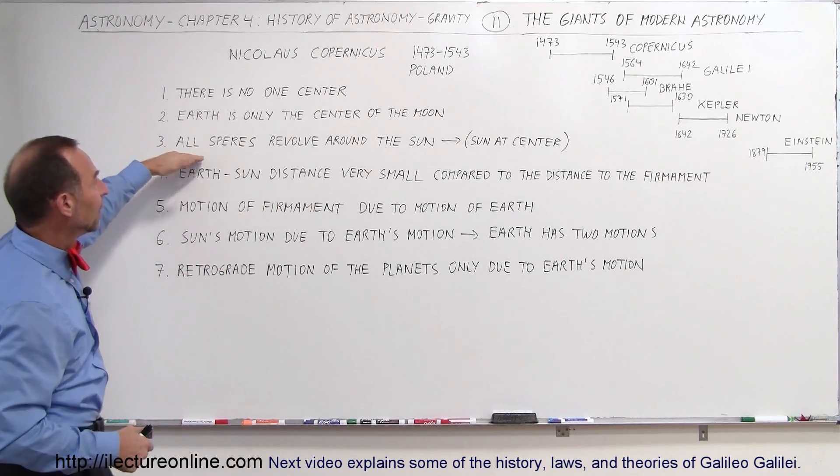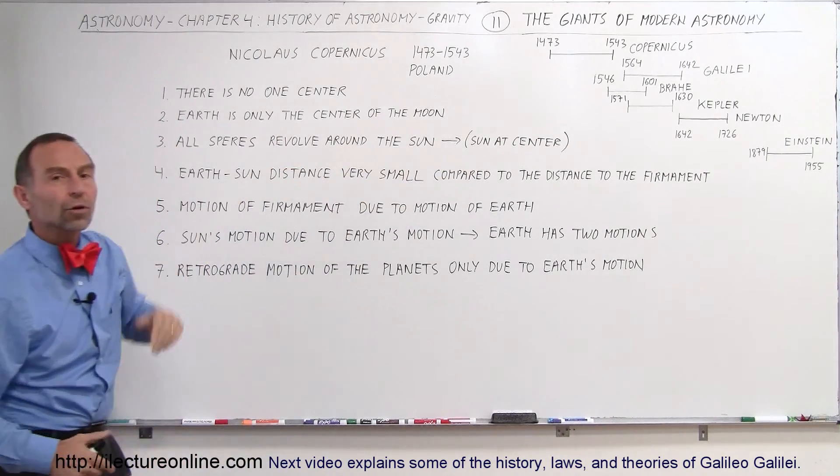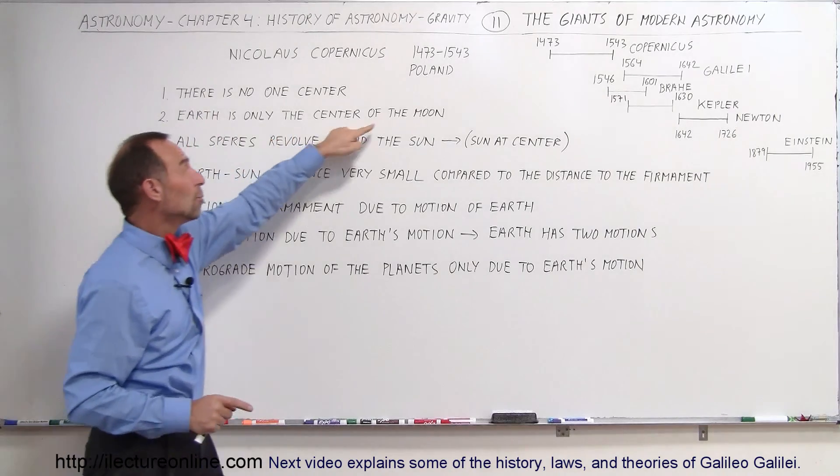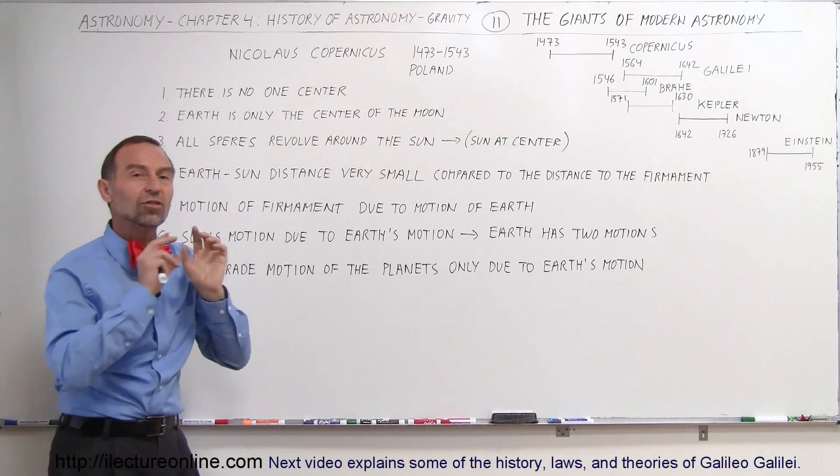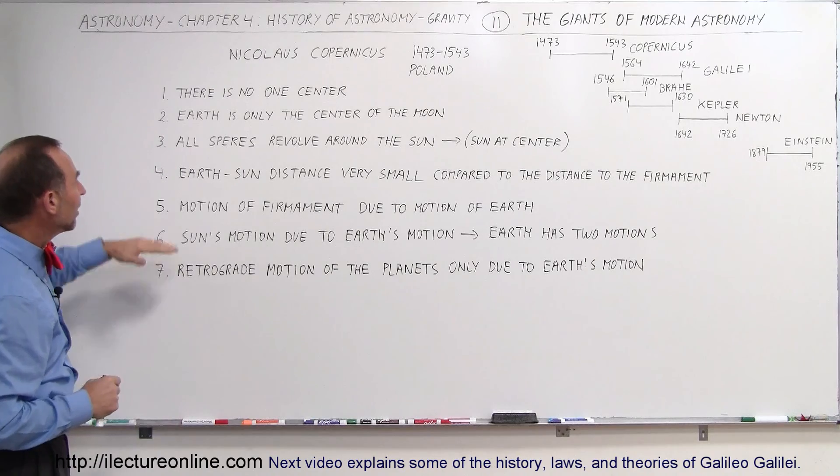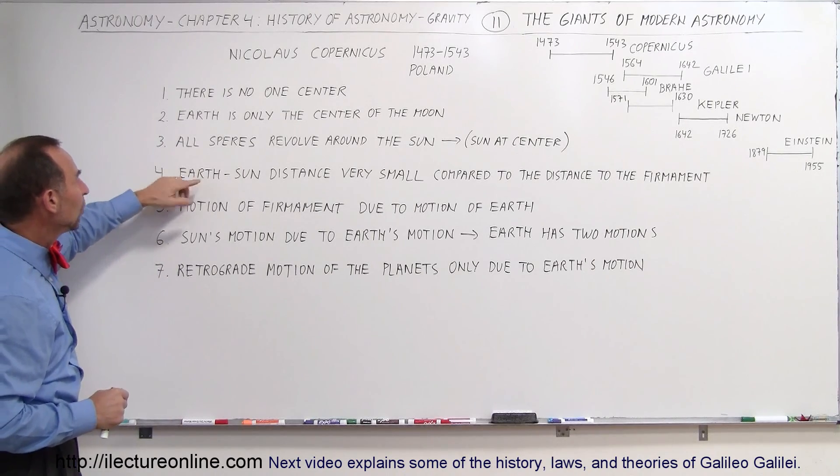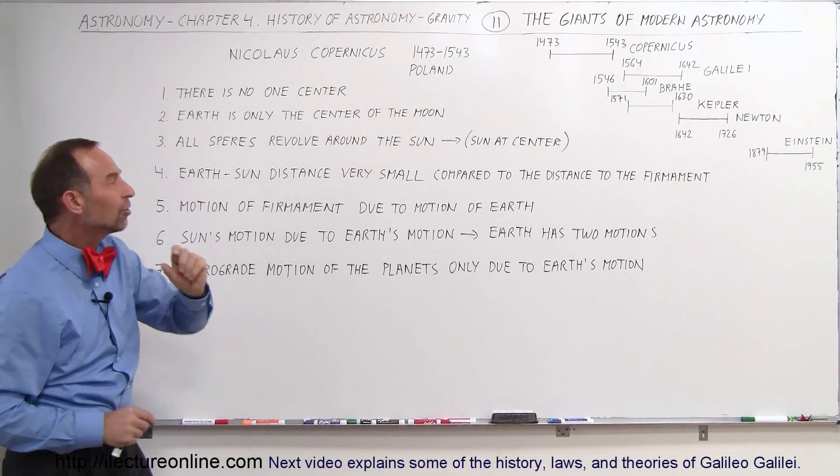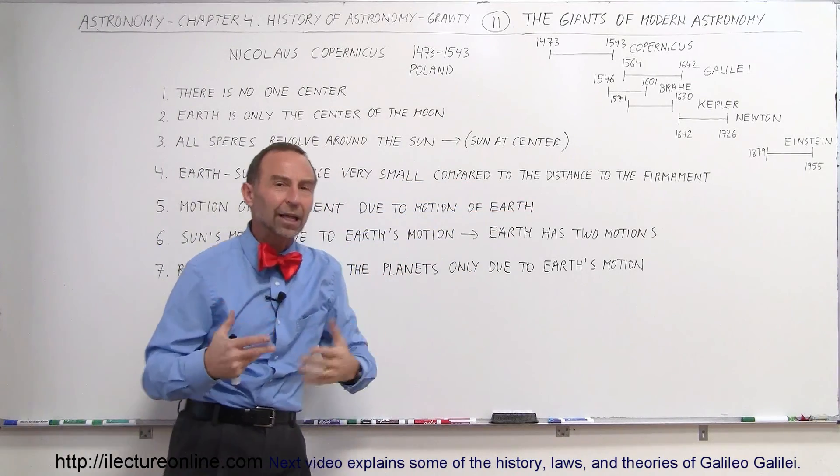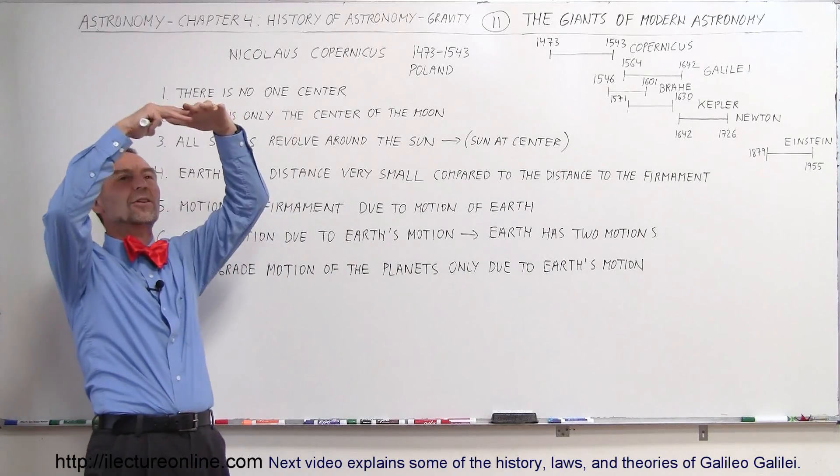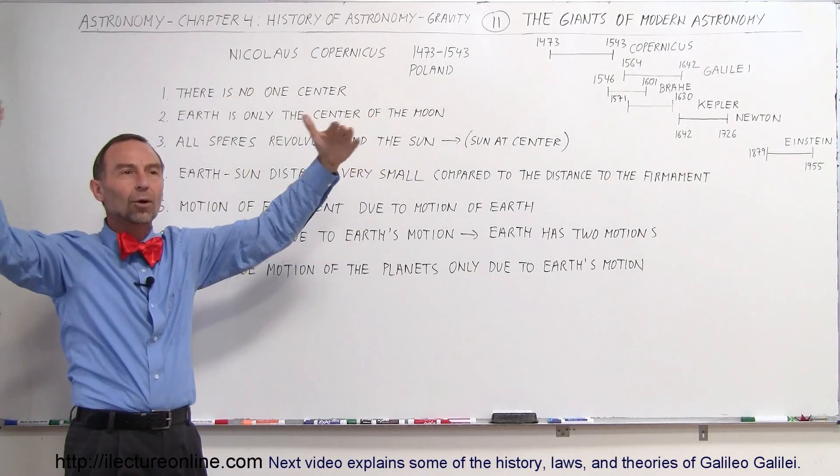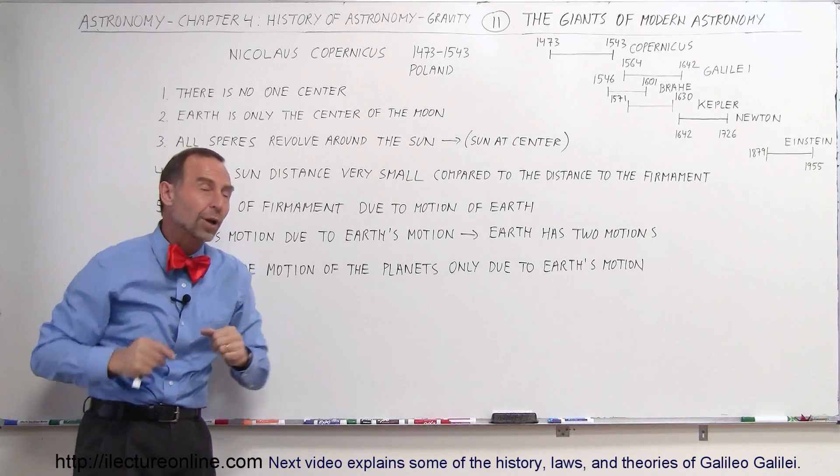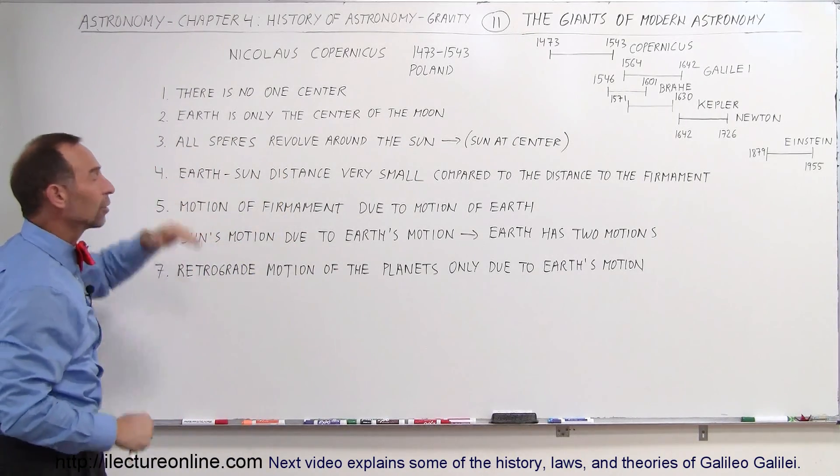He said that the sun is at the center of those spheres. So here we have one center, the Earth, which is the center of the moon, and the sun, which is the center of the spheres, the planets. Then he said that the distance between the Earth and the sun, the Earth-sun distance, is very small, very small compared to the distance to the firmament. And the firmament was that sphere imagined in space where all the stars were at. So the distance to the stars, he said, was much, much greater than the distance between the Earth and the sun.